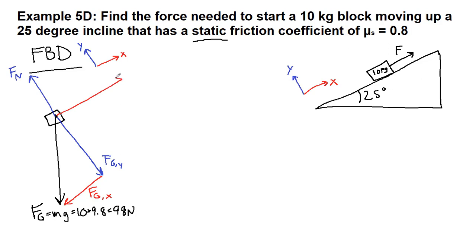We know that we're trying to pull up the ramp. So this is our pull force. That's what we're trying to solve for. And this is friction, which in this case is static friction. So here's our free body diagram.